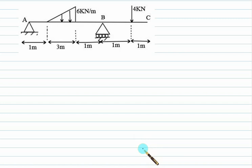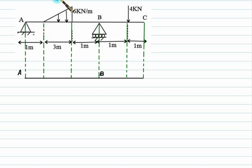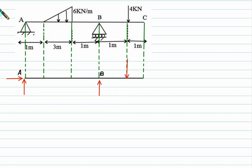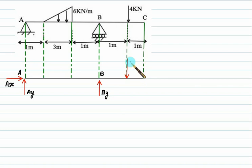Now let's start another problem. This time we have one UVL — a triangular load — and one point load of 4 kilonewton. At point A we have a fixed support, giving two reactions: Ax horizontal and Ay vertical. At point B we have a roller support giving one horizontal reaction By. The 4 kilonewton point load is shown as is. Your main job is to convert the UVL into a point load.